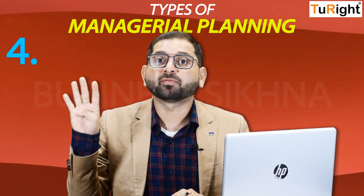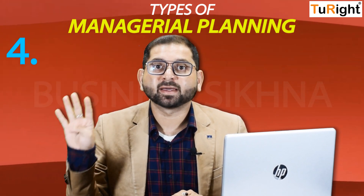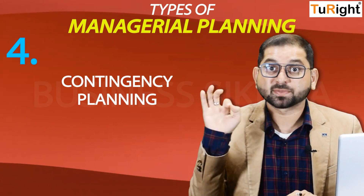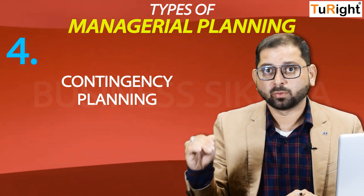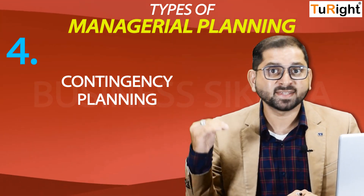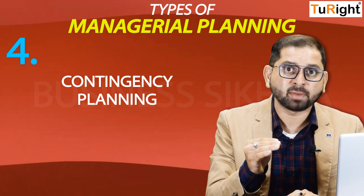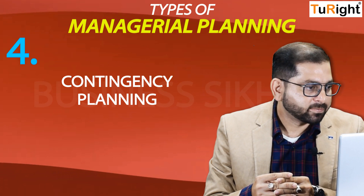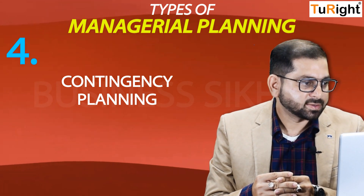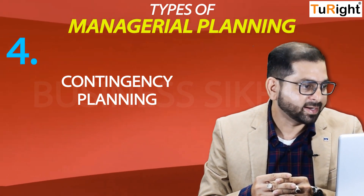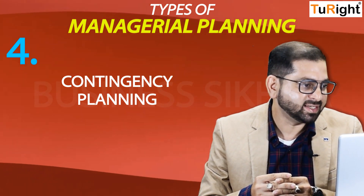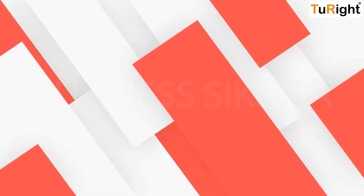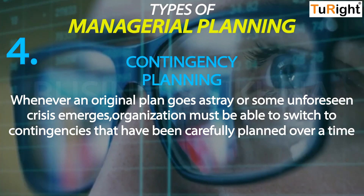The fourth type of managerial planning is called contingency planning. Let me tell you the spelling for those who feel the pronunciation is different: contingency — C-O-N-T-I-N-G-E-N-C-Y — contingency planning.